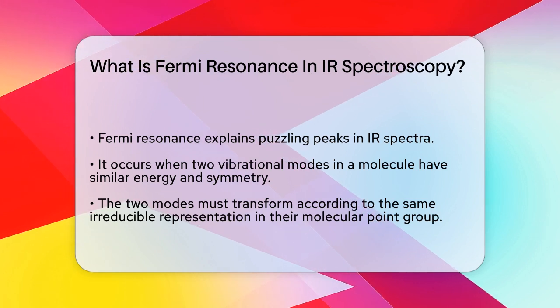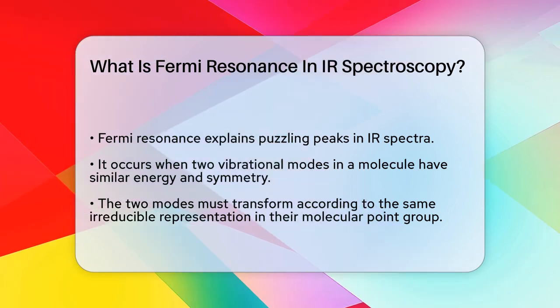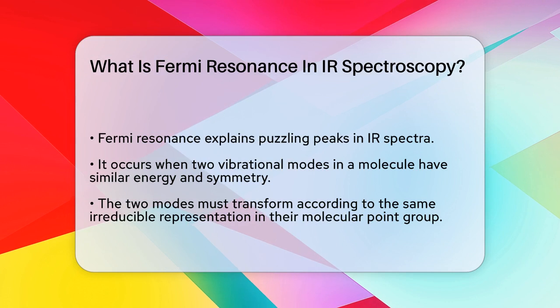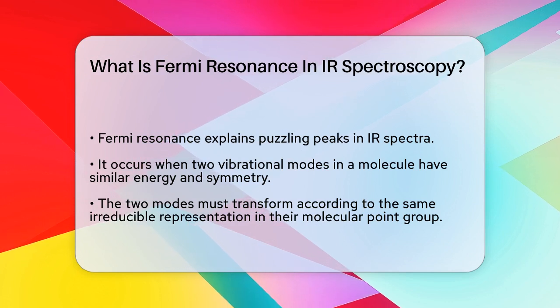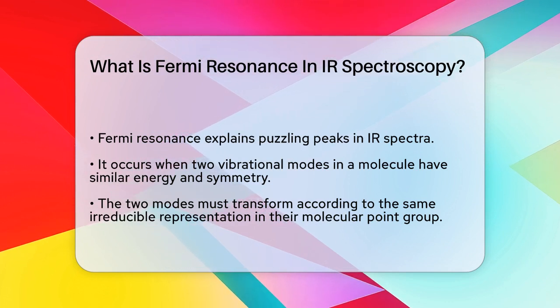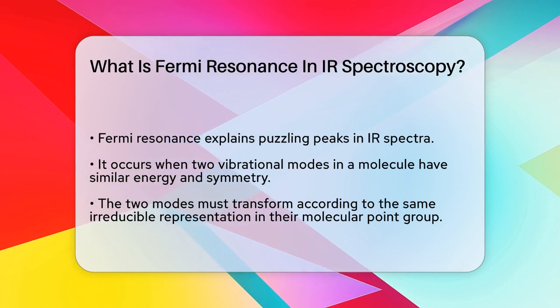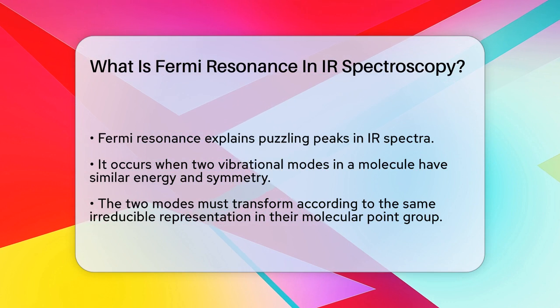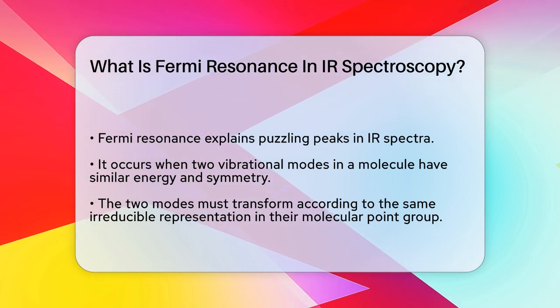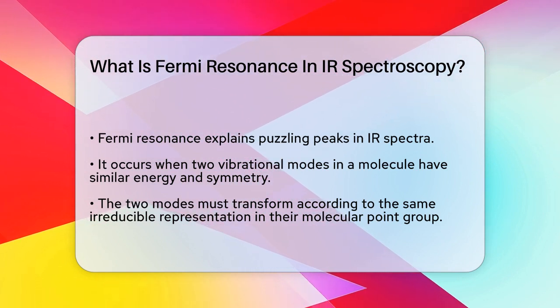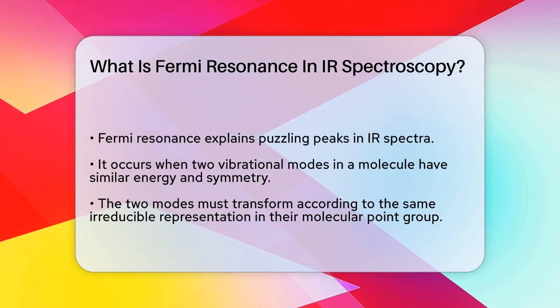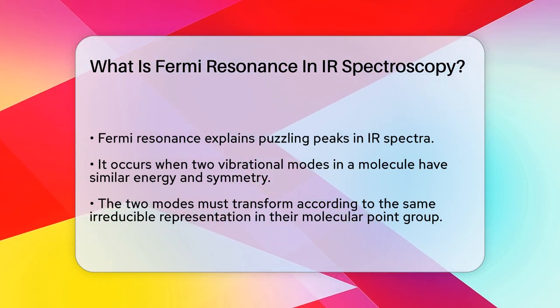Fermi resonance occurs when two vibrational modes in a molecule have nearly the same energy and symmetry. This isn't just any coincidence — it's a specific condition that leads to some interesting effects in IR and Raman spectroscopy.